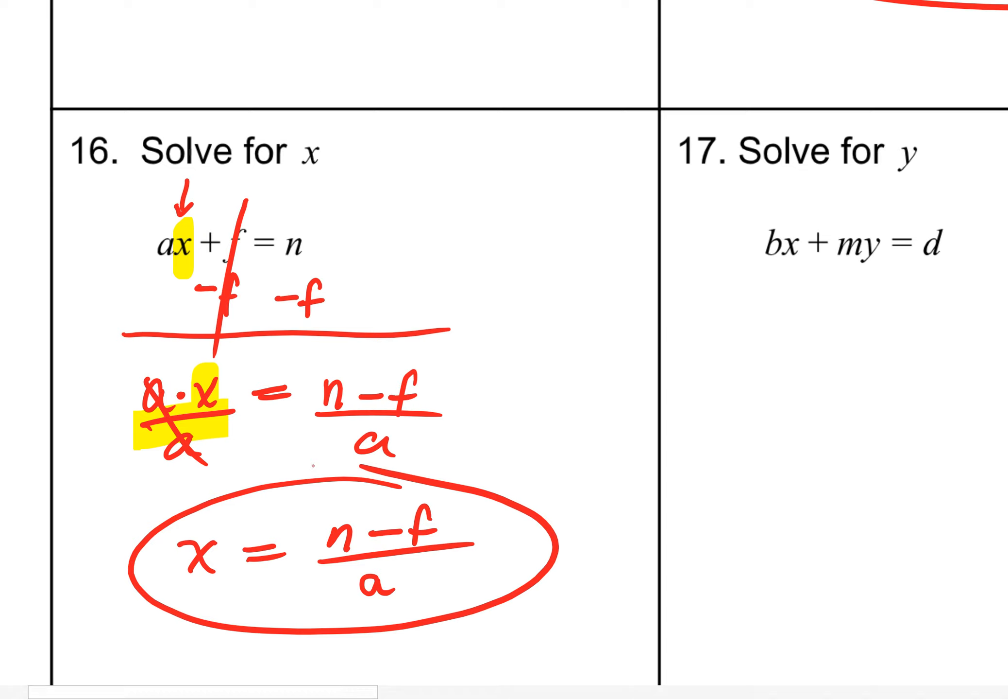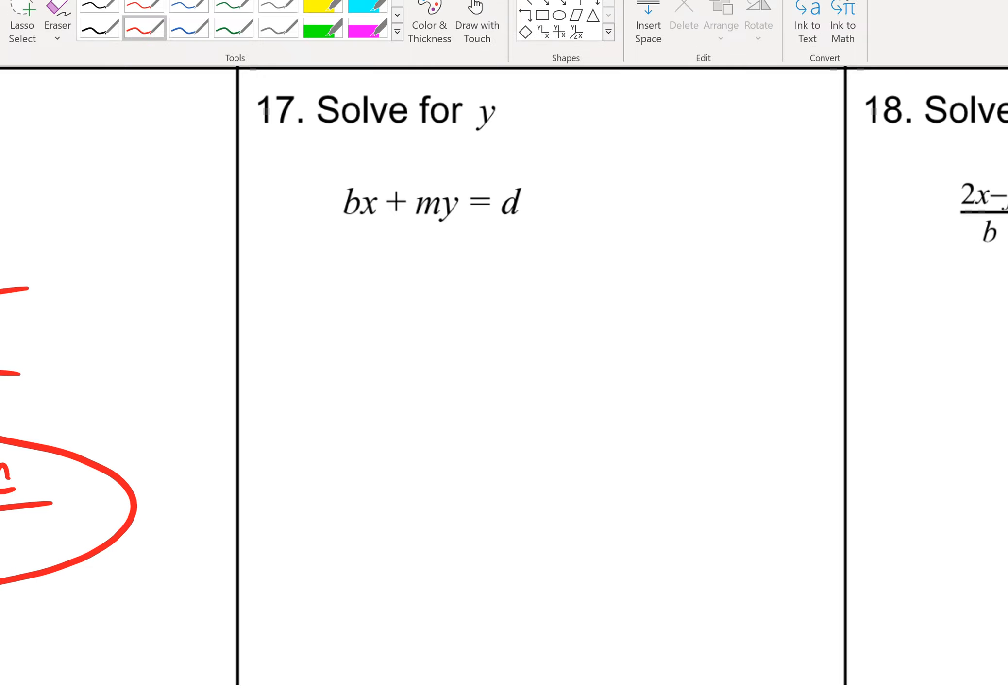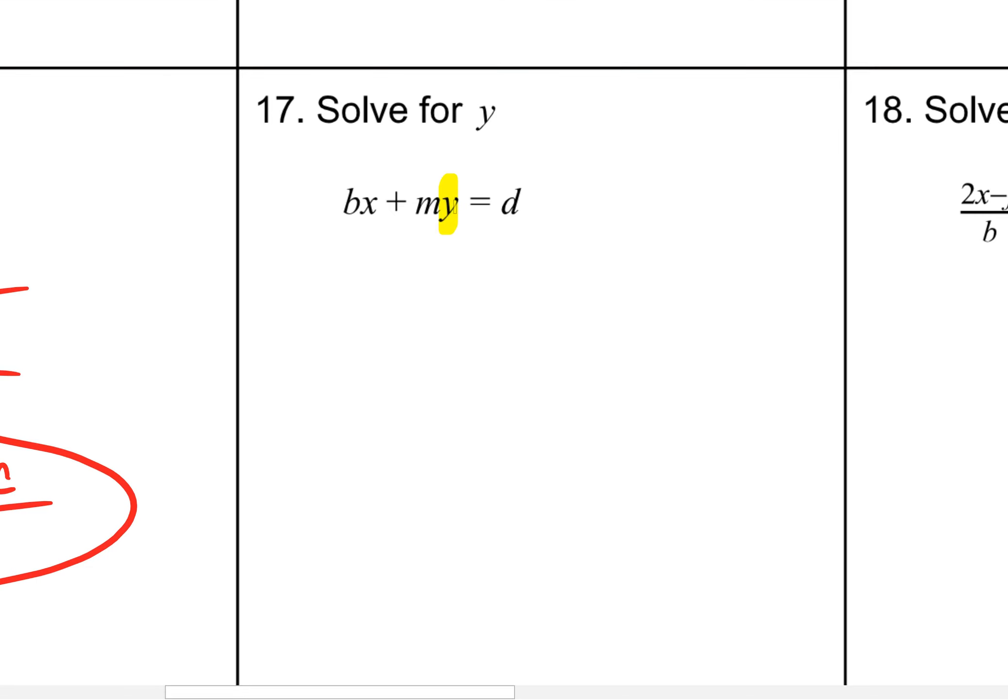As we look at number 17, we are asked to get y alone, but we have this bx plus m times y equals d. This bx is connected through addition. And of course, if you just have the bx right there, it's showing up to be a positive bx. You want to get rid of that bx. And that inverse operation of adding bx is subtracting bx.